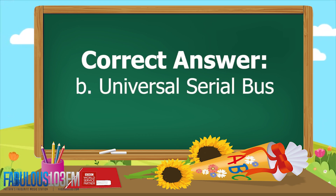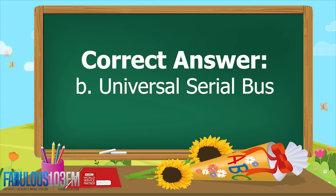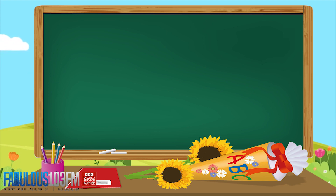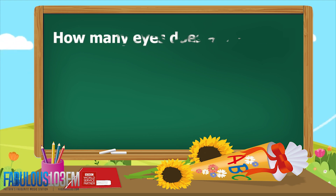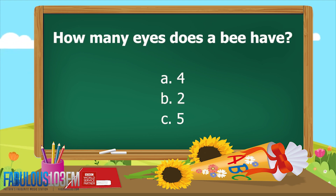If you answered B, Universal Cereal Boss, then you're absolutely correct! The second question yesterday: how many eyes does a bee have — A) 4, B) 2, or C) 5?